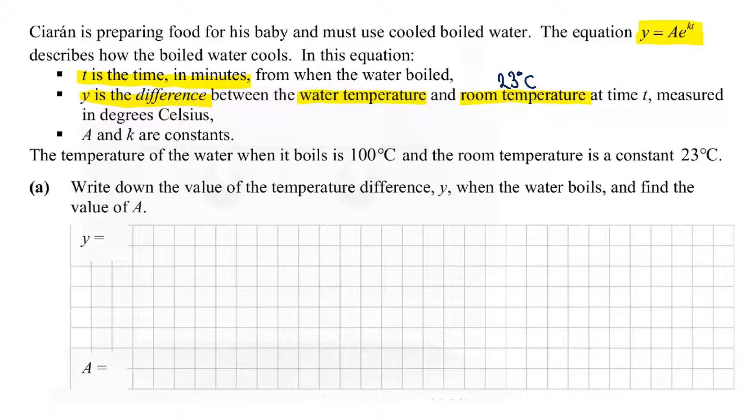Part (a) asks: write down a value for the temperature difference y when the water boils and find a value for A. When the water boils, it's going to be 100 degrees minus the room temperature at 23 degrees, which gives us 77. So that's our difference.